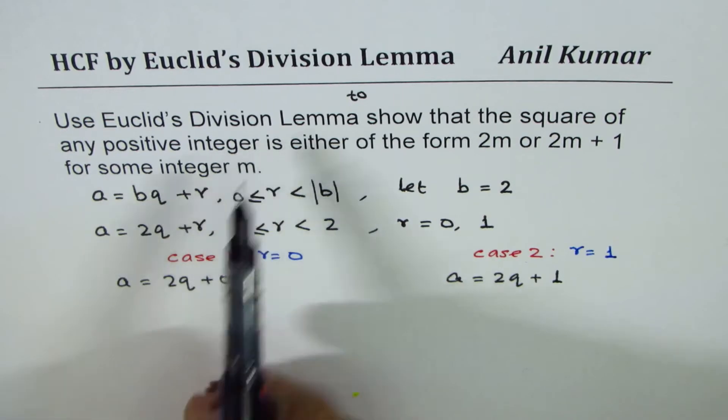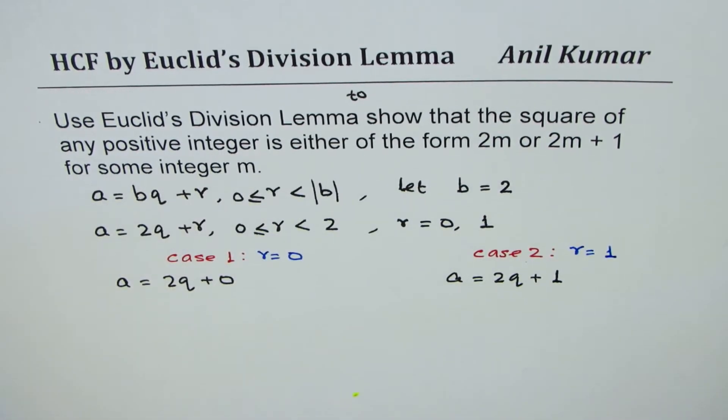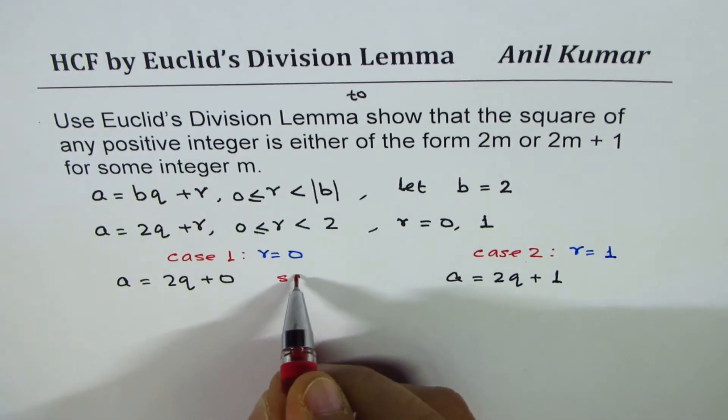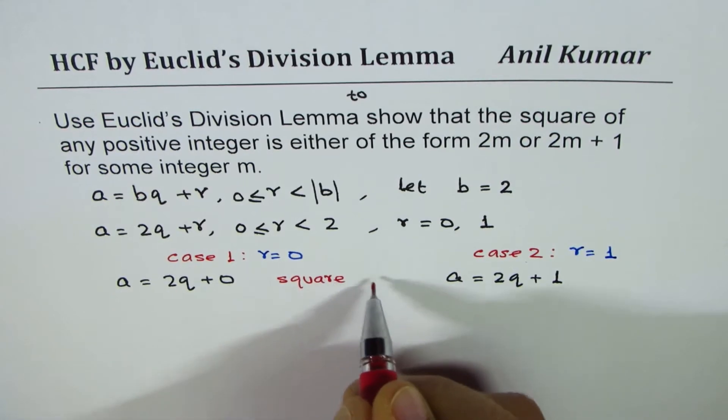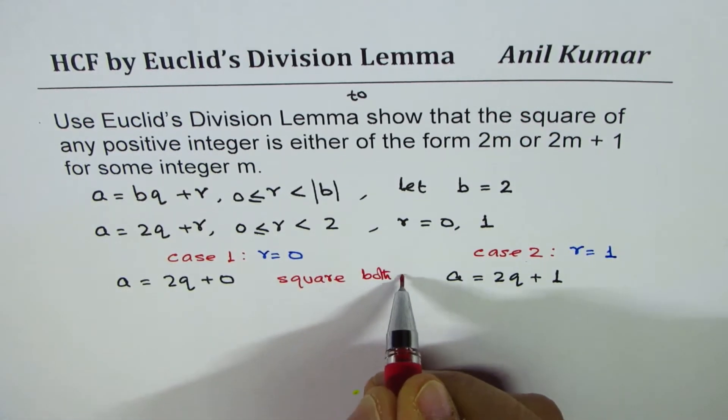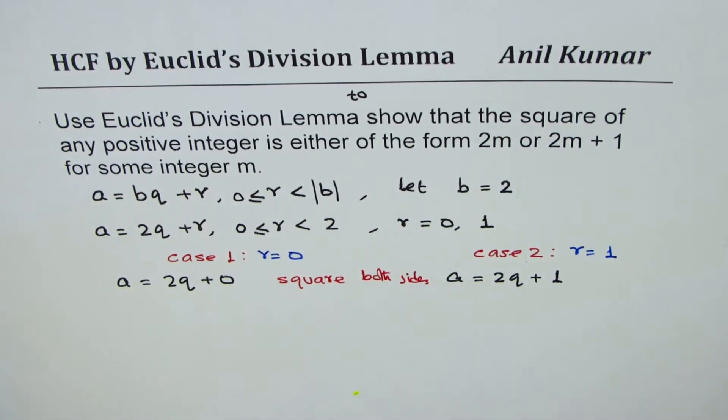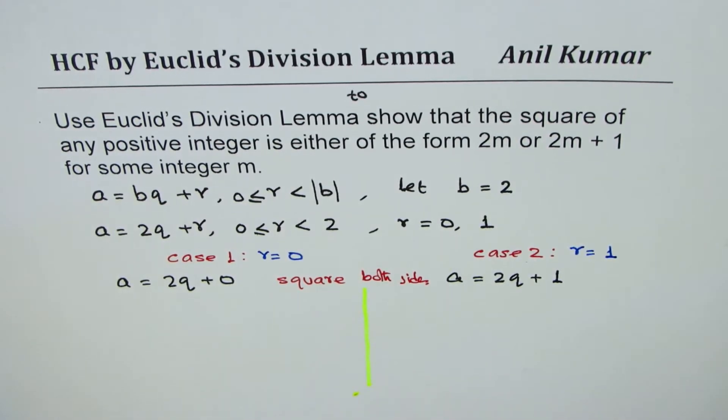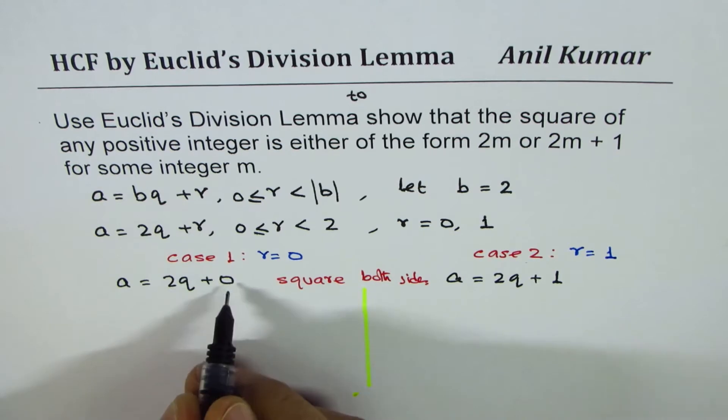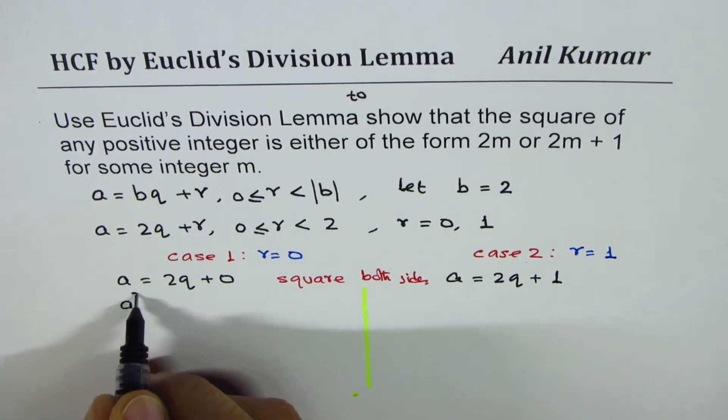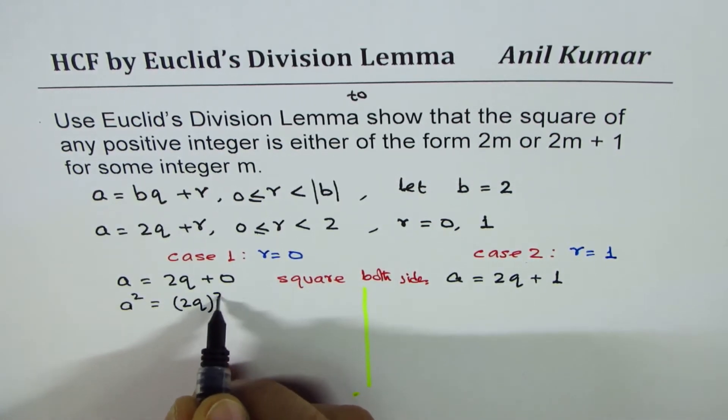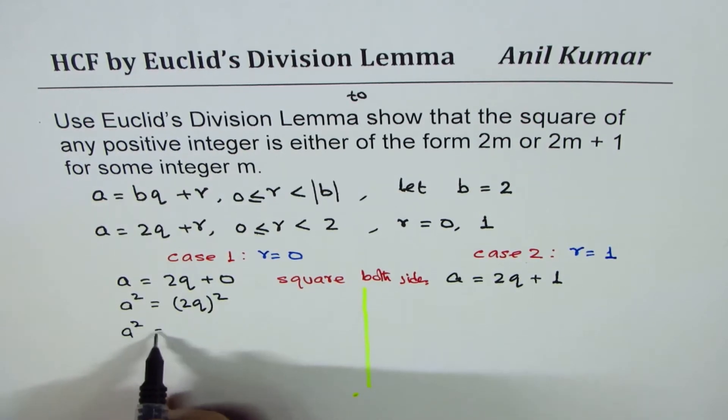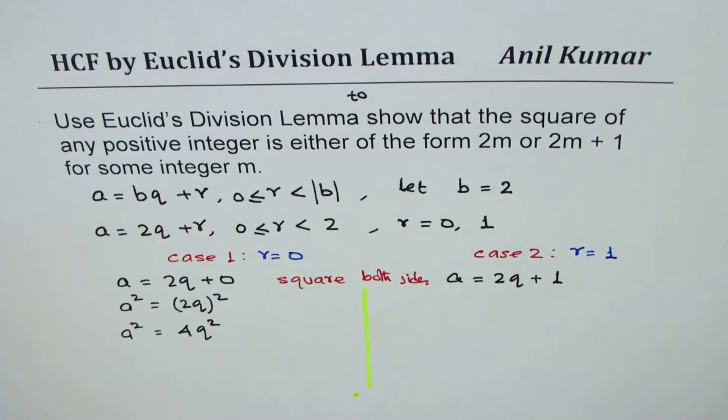finding the square of any positive integer. So let's square both sides. We'll do them separately, one by one. What do we get here? Since 0 is there, we have a² = (2q)², or a² = 4q². Now I can take 2 common.